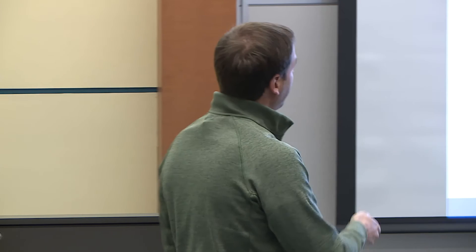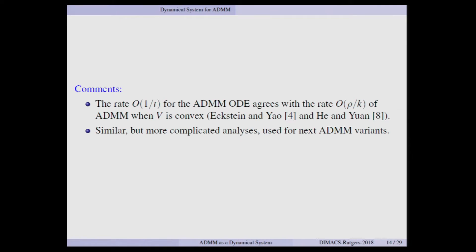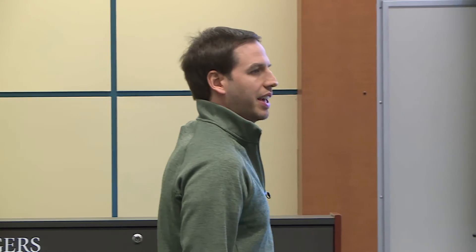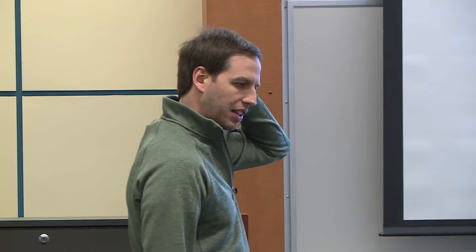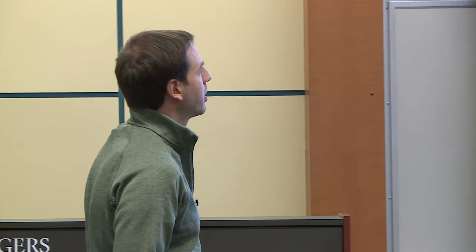The rate I just showed is O(1/T), which agrees with O(1/k) for the discrete algorithm, as established by a couple of authors. I'm not going to go through any more of the analyses for the other variants — they take too long and are a bit tedious — but similar types of analyses are used to establish all the results I give today.